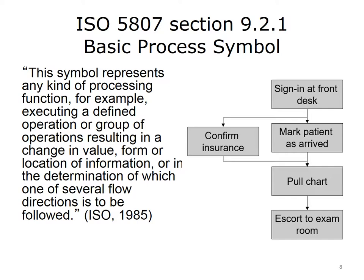The basic process symbol represents any kind of processing function, such as executing a defined operation or group of operations resulting in a change in value, form, or location of information, or determining which of several flow directions to follow (ISO 1985). In this example, the basic process symbol represents: patient signs in and checks in with the front desk; receptionist enters the patient into the visit system and confirms insurance information; and the nurse pulls the chart and escorts the patient to the exam room.